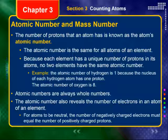Atomic numbers are always whole numbers. That should make sense if you go back to the last section and Dalton's postulates — atoms cannot be subdivided under normal chemical processes. You can't have half of a proton. You either have a proton or you don't. So you have whole numbers of protons, and therefore whole number atomic numbers.